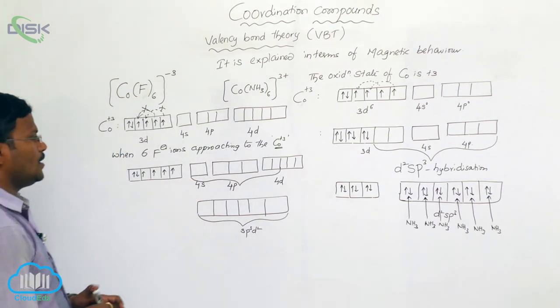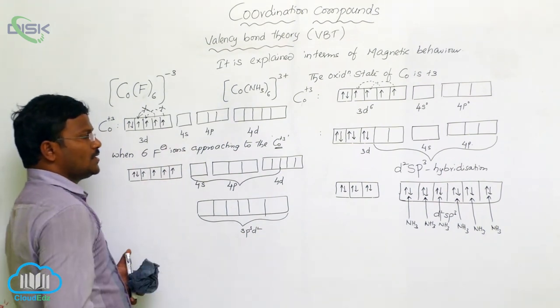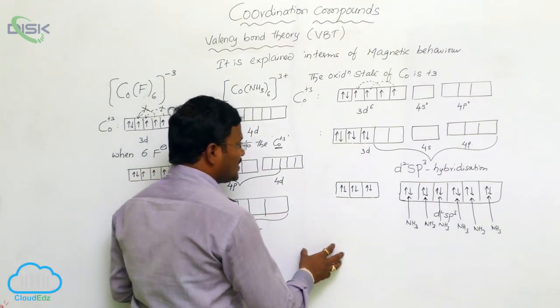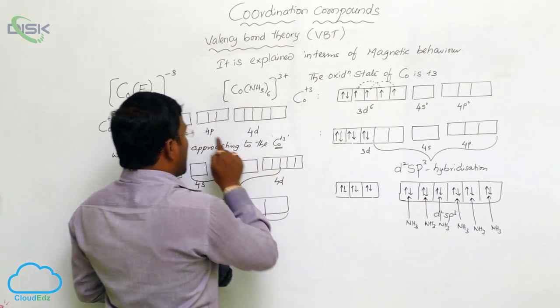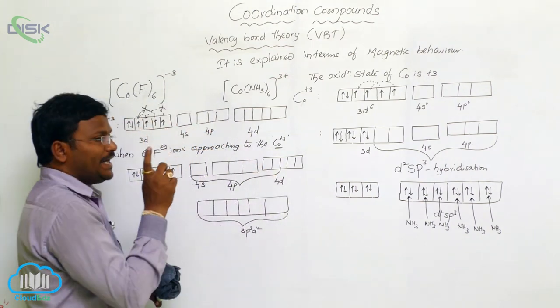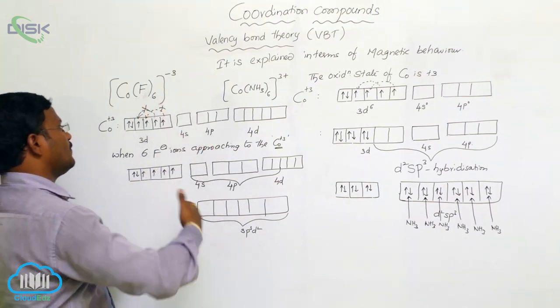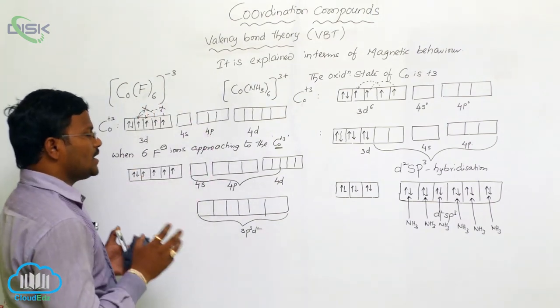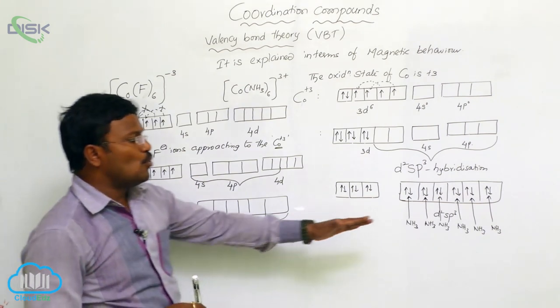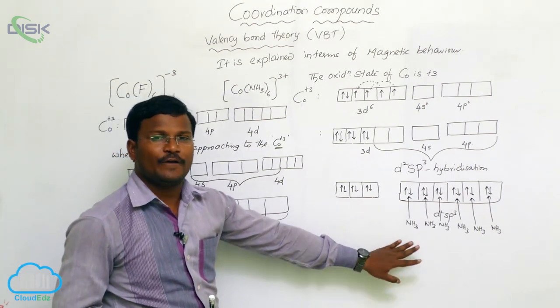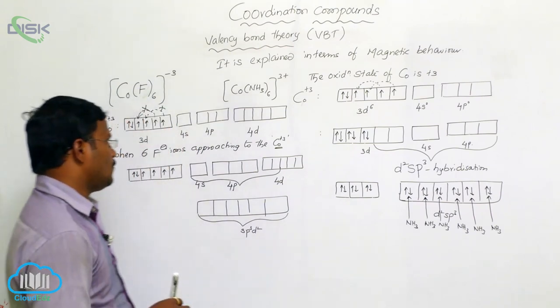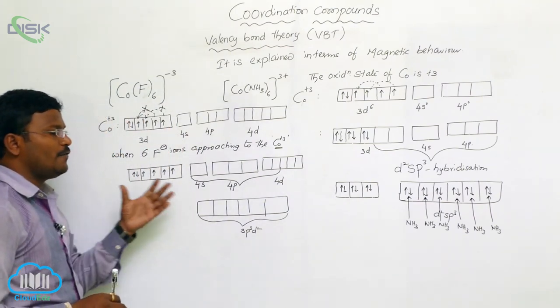sp3d2 hybridization. So, we have to remember that why not electrons of 3d orbital never arranged inside, never participates in rearrangement. Only the reason is ammonia is a strong field ligand whereas fluoride is a weak field ligand.